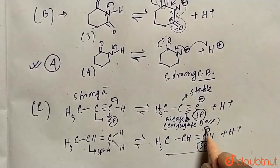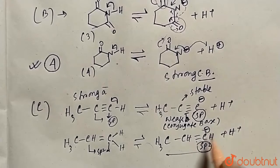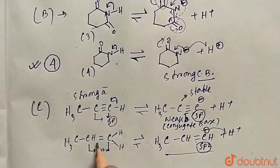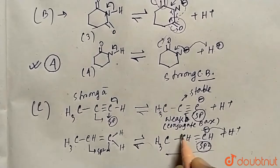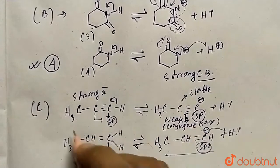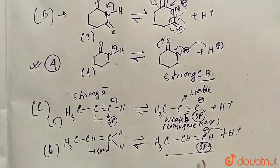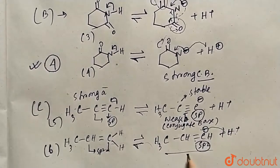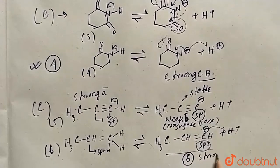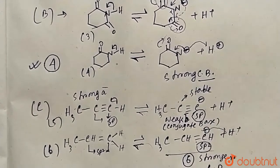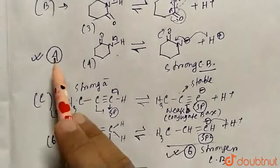Because the alkyne carbanion is very stable, alkyne is a strong acid, and by the rule that a strong acid has a weak conjugate base, its conjugate base is weak. The sp2 carbanion from the alkene is not as stable, so it has a strong tendency to recapture H⁺ and return to the original compound more easily. Therefore compound six (the alkene) gives the stronger conjugate base.